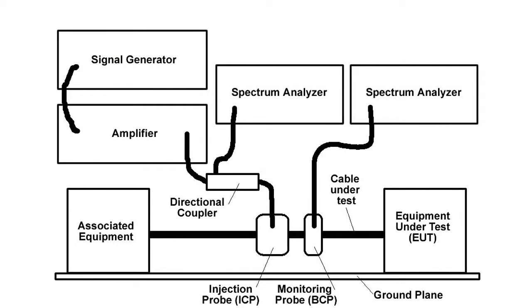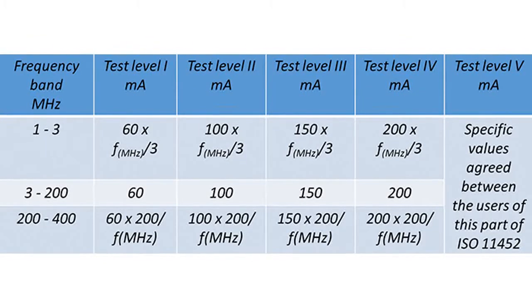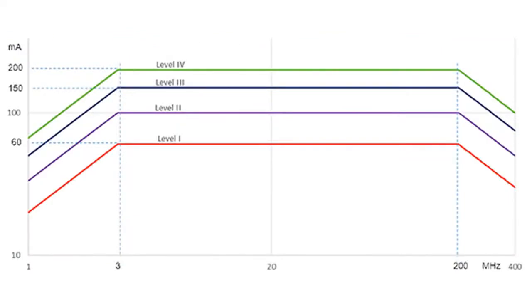Let us discuss the calibration procedure. The calibration procedure, same for both methods, is performed with an unmodulated sinusoidal RF signal. During the calibration procedure, net power — forward power minus reverse power — is injected into the current probe creating the required current level in the calibration fixture over the required frequency range, 1 to 400 MHz. The level of forward power used during the calibration is later used during the actual testing. BCI test severity levels, required current levels, are specified in table. For bulk current injection, calibration process limits are predefined as per standard ISO 11452. These limits are displayed in figure.